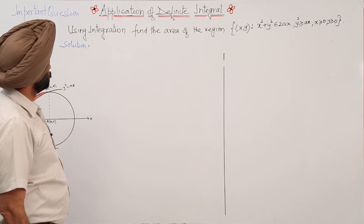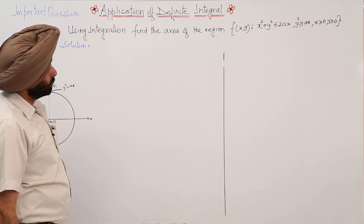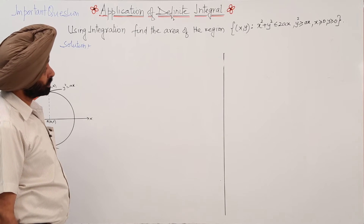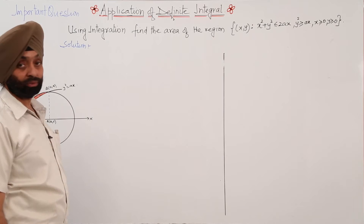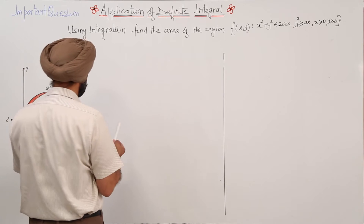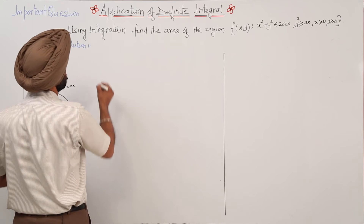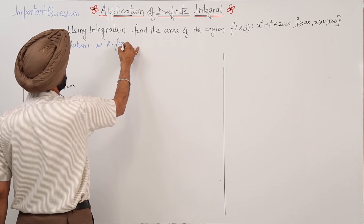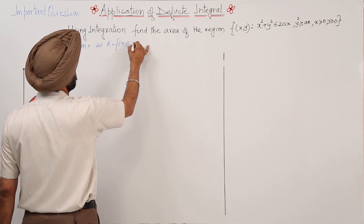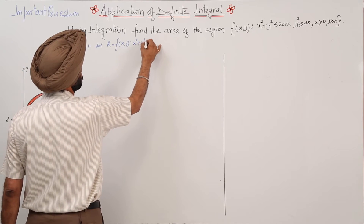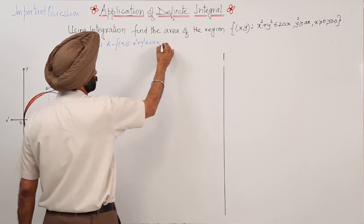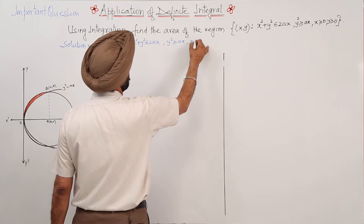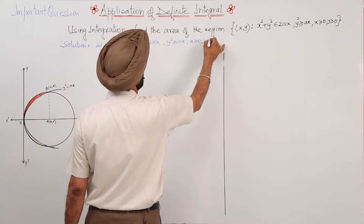The given question is: using integration, find the area of the region R such that x² + y² ≤ 2ax, y² ≥ ax, x ≥ 0, and y ≥ 0.